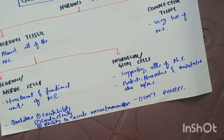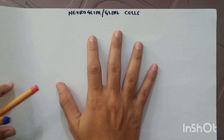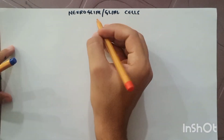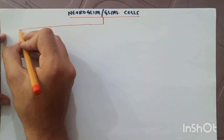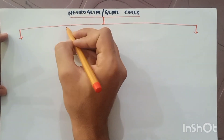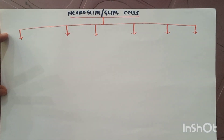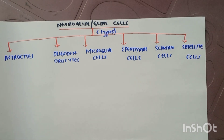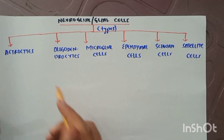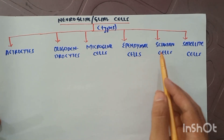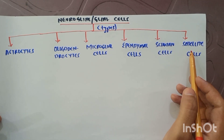The neuro glial or glial cells consist of six types. Number one is the astrocytes, number two is the oligodendrocytes, number three is the microglial cells, number four is the ependymal cells, number five is the Schwann cells, and number six is the satellite cells.